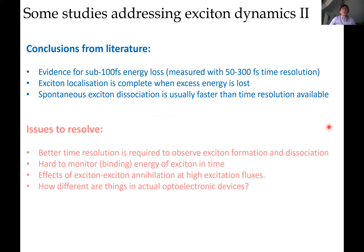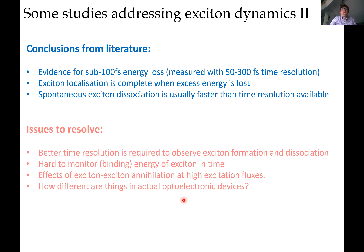These methods converge to some conclusions. Most agree there is about a 100 femtosecond timescale of energy loss of the hot exciton — depending on the system and time resolution, people claim between 50 and 300 femtoseconds for how fast a hot state becomes a cold state. Most methods also agree that a localized state is formed when the energy is lost, and that spontaneous exciton dissociation into carriers usually happens very early, before the exciton loses its excess energy.